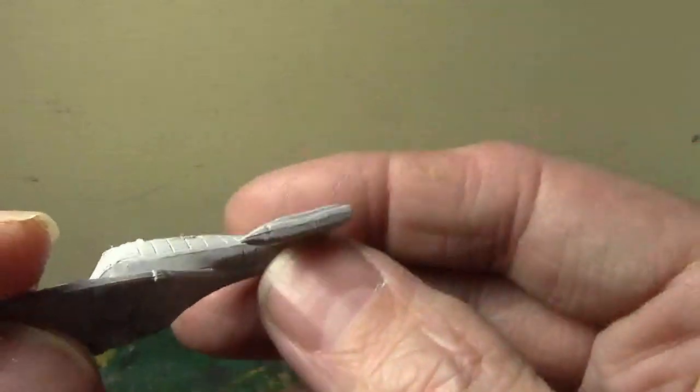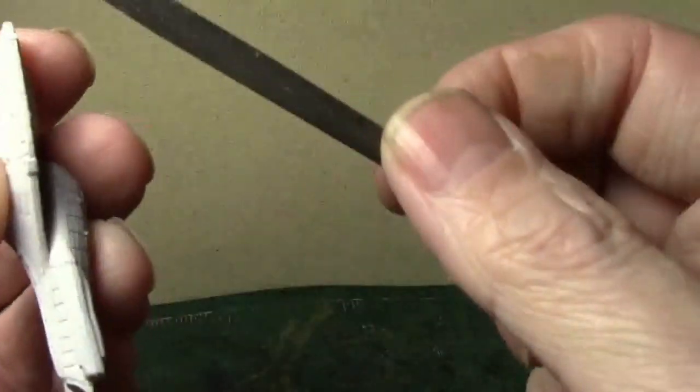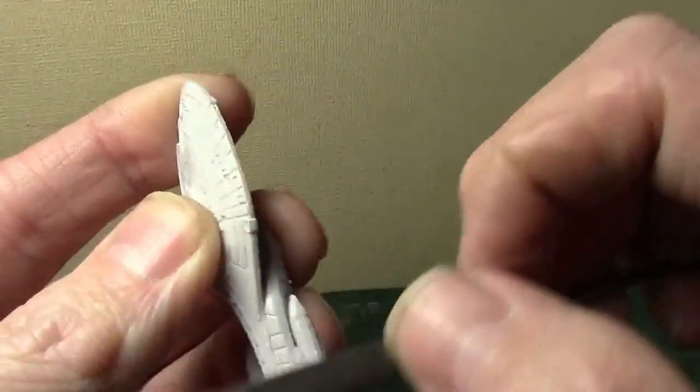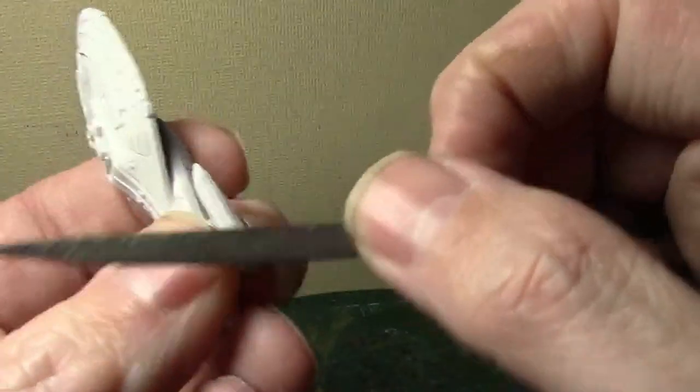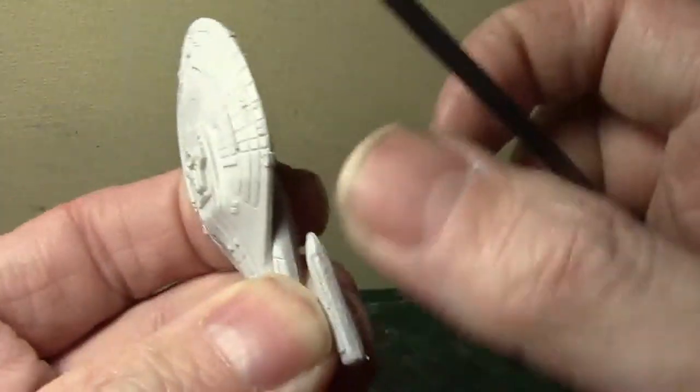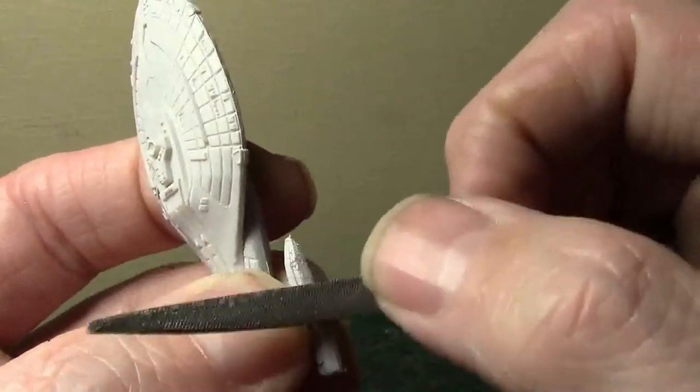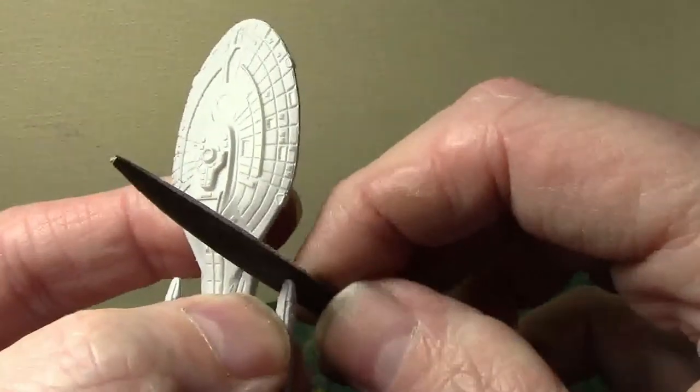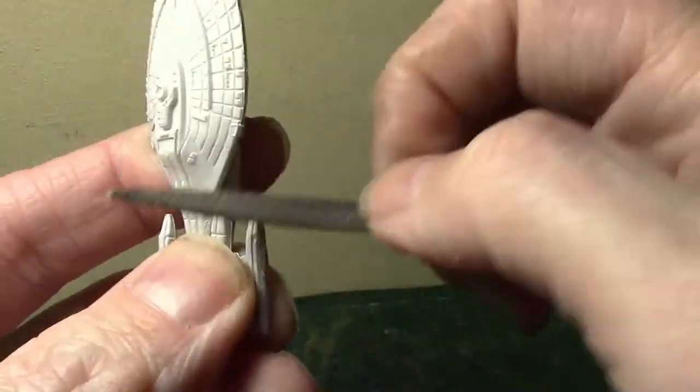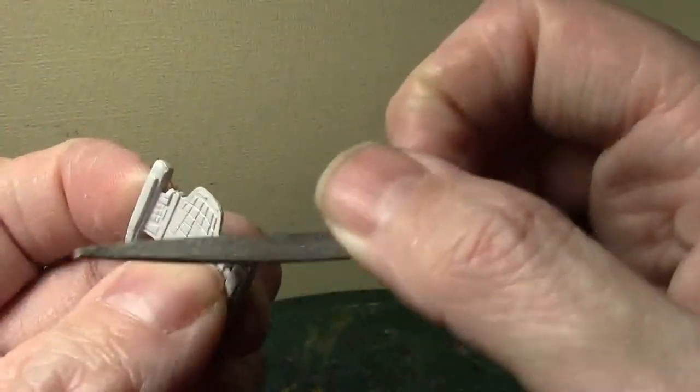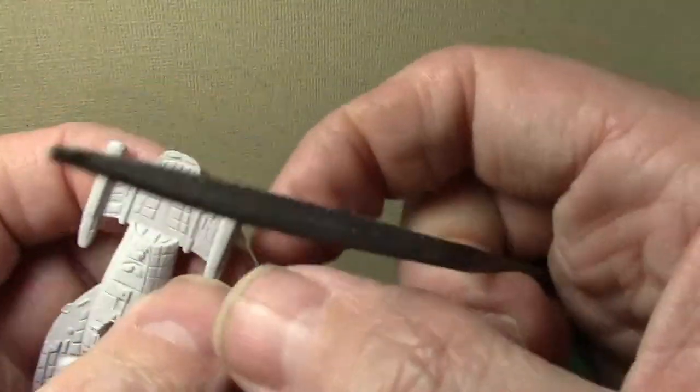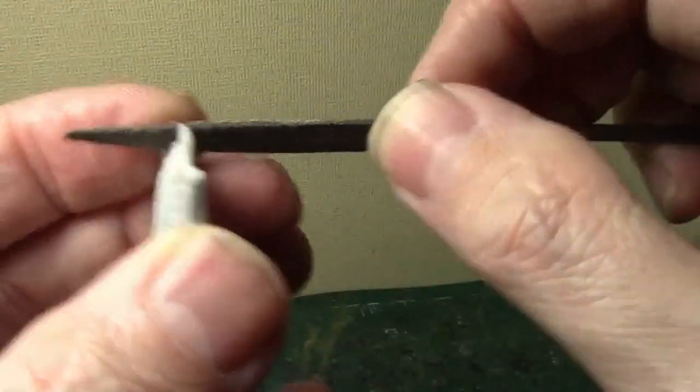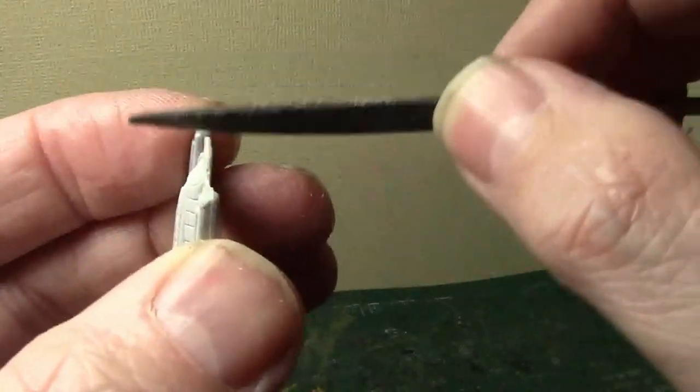The first thing I notice is there's definitely still some mold lines here. Let me grab my file. They're mainly here along the nacelles. This is a very soft material. It's not taking a lot to get the mold lines off. Shaving the front of these nacelles is going to be a little tricky. That's really bad inside of the nacelles there.